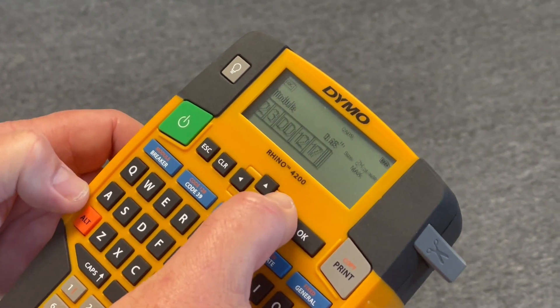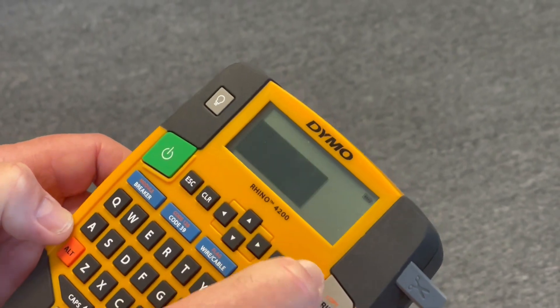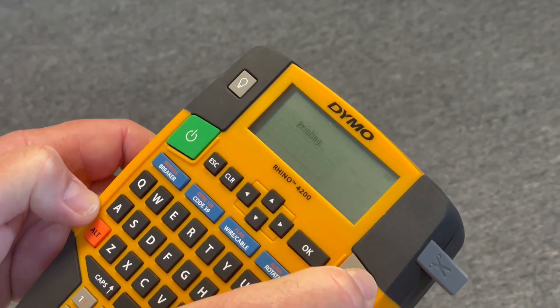So once you have that, if you make a mistake, now that six one should be blank. Just hit okay, hit print.